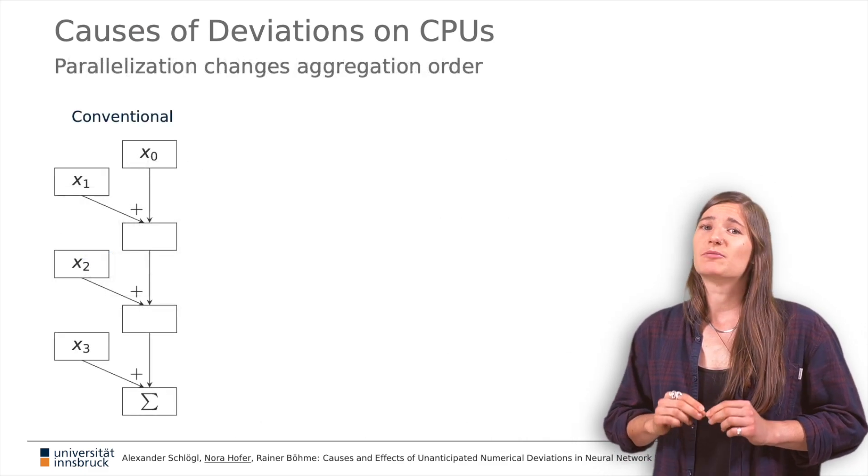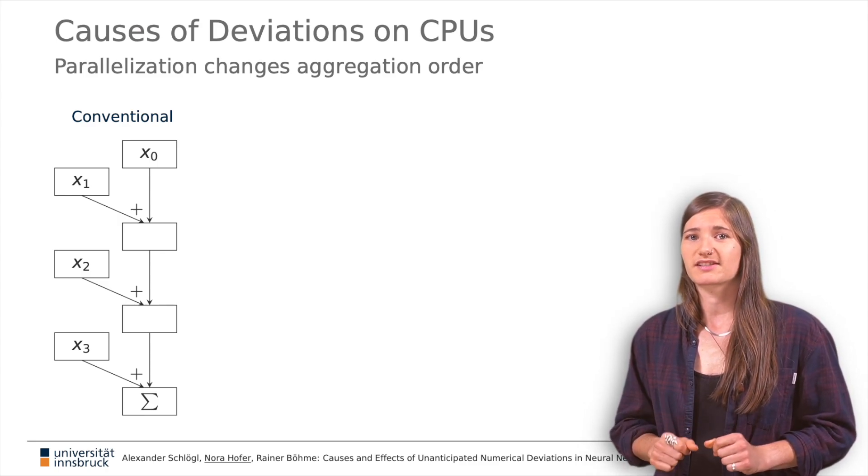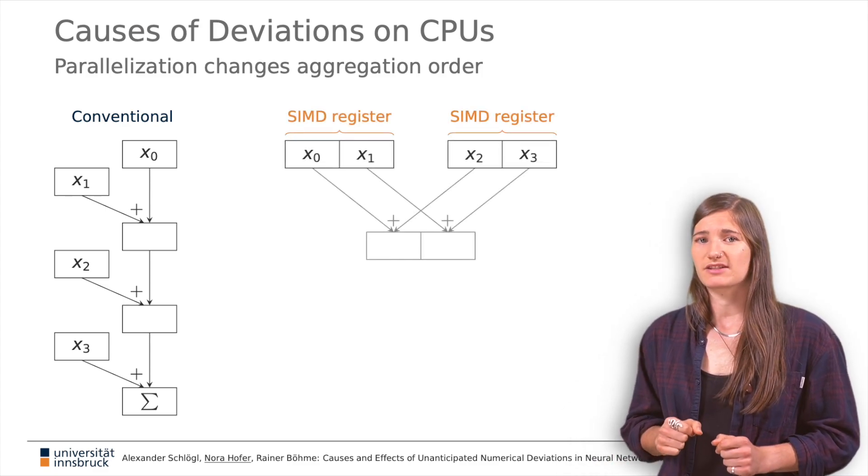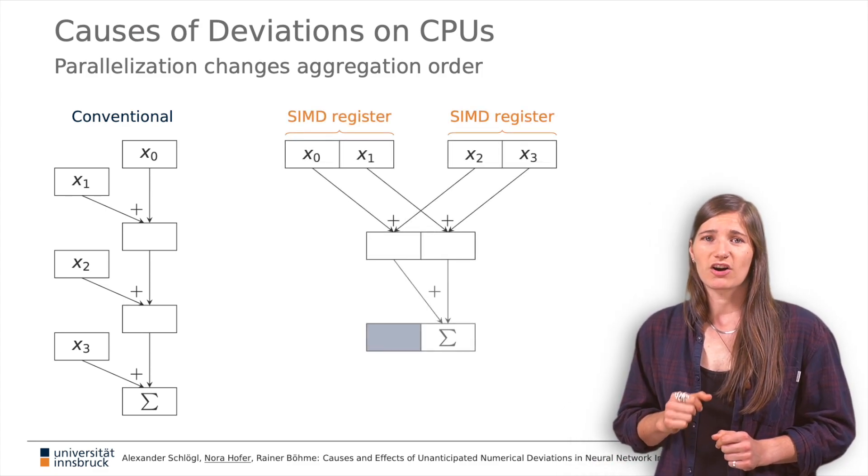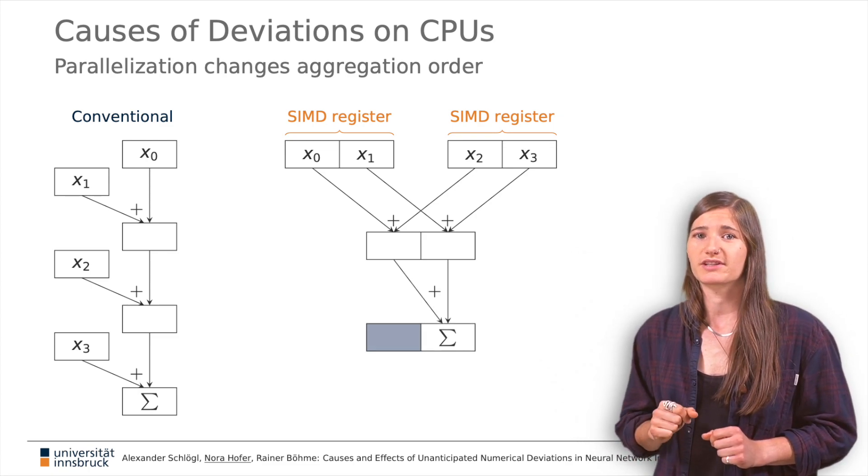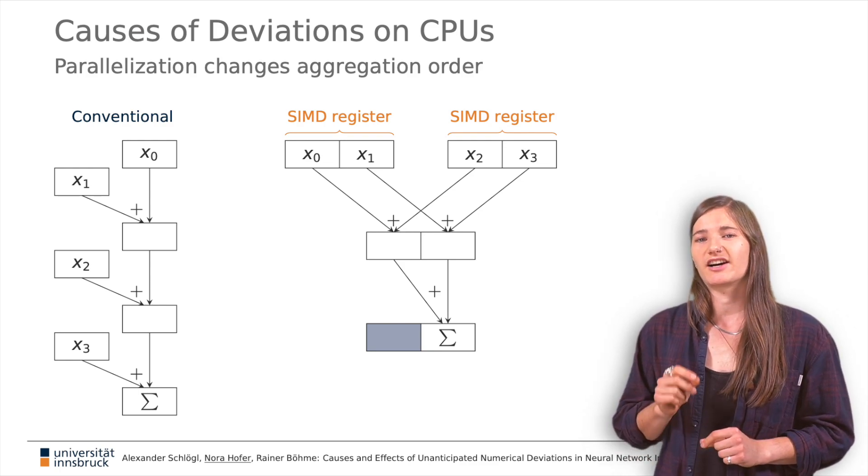Now as machine learning stacks are heavily optimized, they make use of parallel processing features offered by CPUs such as multiple cores or SIMD instructions. All of these features can alter the order in which values are aggregated when computing convolutions, leading to different results depending on the optimization the hardware supports.